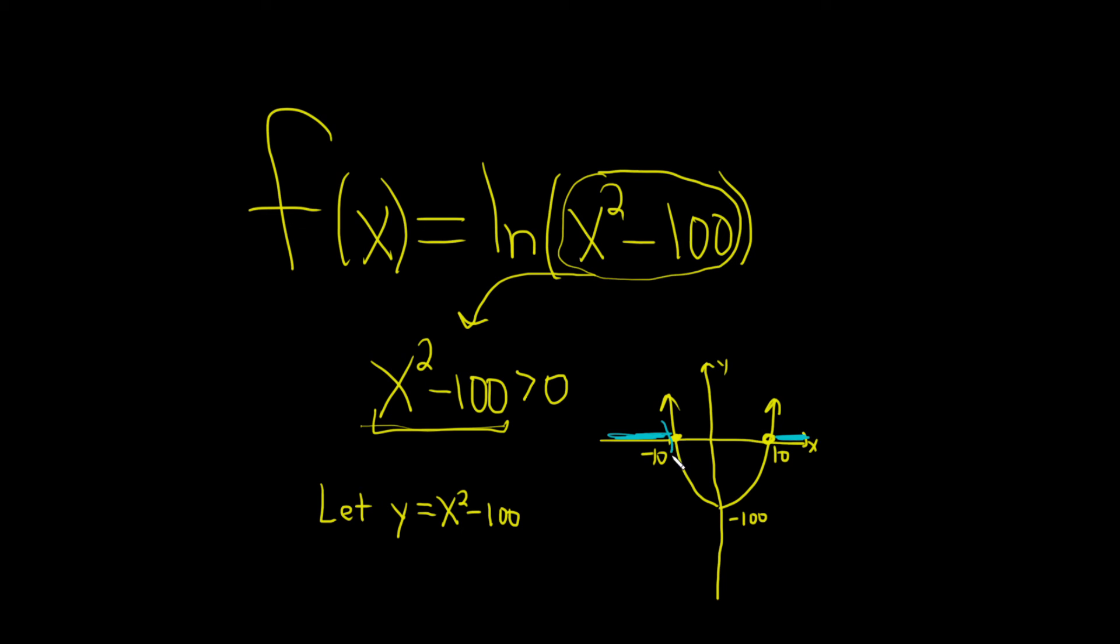So we'll use parentheses because we're not including the tens, because it's a strict inequality. So from this picture, it'll be negative infinity to negative 10, union 10 to infinity. Those are the x-values where the graph of this function is positive.